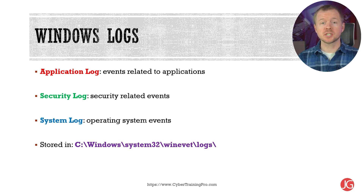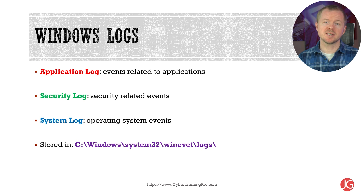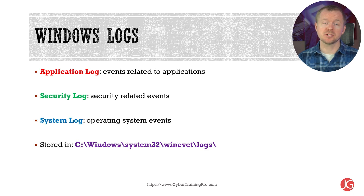Different types of logs track activity in various locations, and being aware of them is an important security skill. Windows has three main logs: the application log, which records events related to applications like warnings and errors; the security log, which stores security-related events like auditing file access or login events; and the system log, which stores OS-related events like shutdown events, start/stop of services, and drivers loading or failing to load. Local Windows logs can't be viewed with a text editor — you must use the Windows Event Log Viewer, PowerShell, or a special application like a SIEM tool.